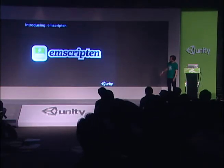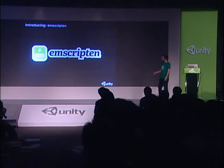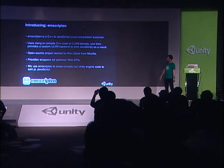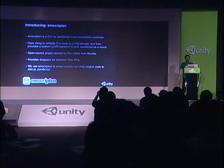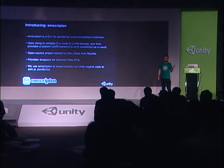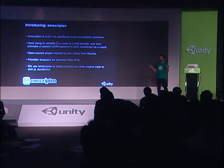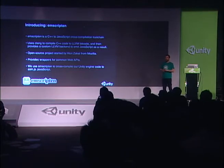The first technology we use is Emscripten — a C++ to JavaScript cross-compiler. Internally it uses the Clang compiler to compile C++ code to LLVM bitcode, then provides a custom LLVM backend which emits corresponding JavaScript code that matches the behavior of the C++ code. Emscripten is an open source project started by Alon Zakai, who works at Mozilla.